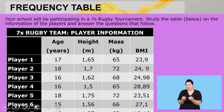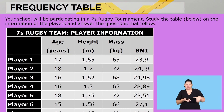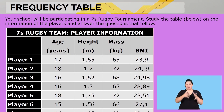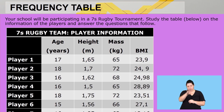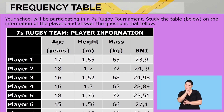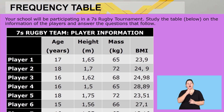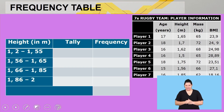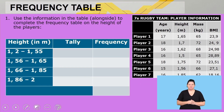The first question says your school will be participating in a sevens rugby tournament. Study the table of player information and answer the questions that follow. We have players one to seven, with their age, height, mass, and BMI.